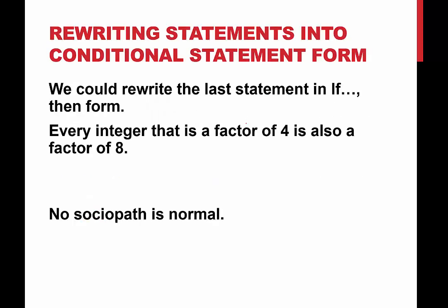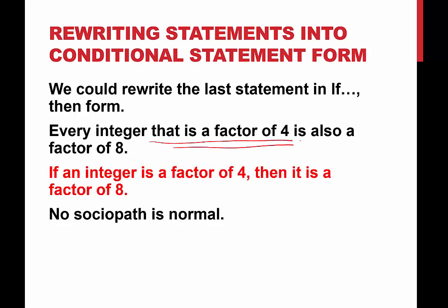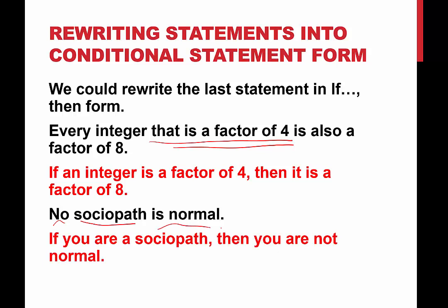Here are two more to look at. How could we rewrite 'every integer that is a factor of four is also a factor of eight' as a conditional statement? And how could we take 'no sociopath is normal' and write that as a conditional? Pause the video and try. For the first one: if an integer is a factor of four, then it is a factor of eight. For the second: if you are a sociopath, then you are not normal.